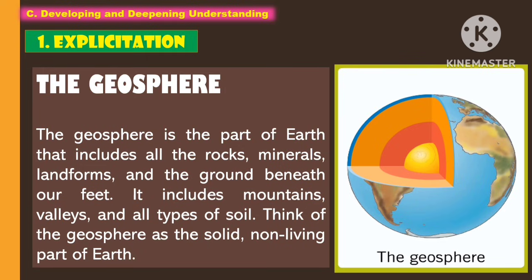The first earth system is the geosphere. The geosphere is the part of the earth that includes all the rocks, minerals, landforms, and the ground beneath our feet. It includes mountains, valleys, and all types of soil. Think of the geosphere as the solid, non-living part of the earth.